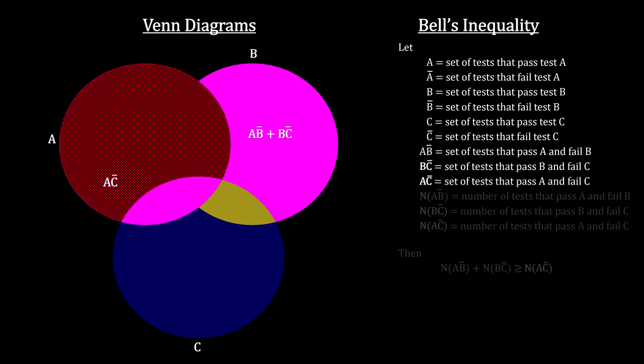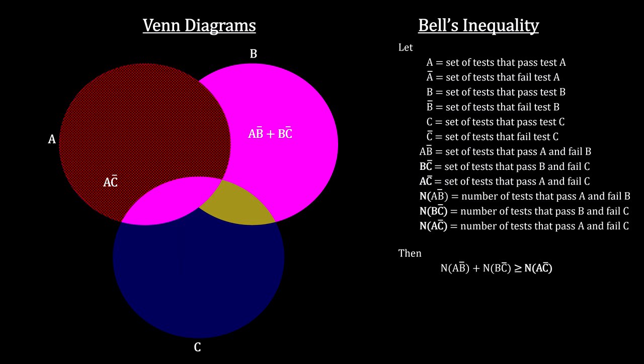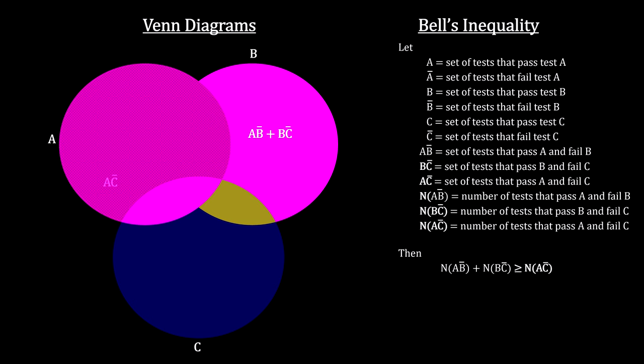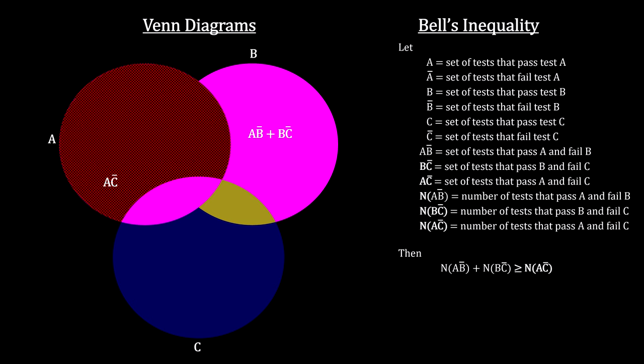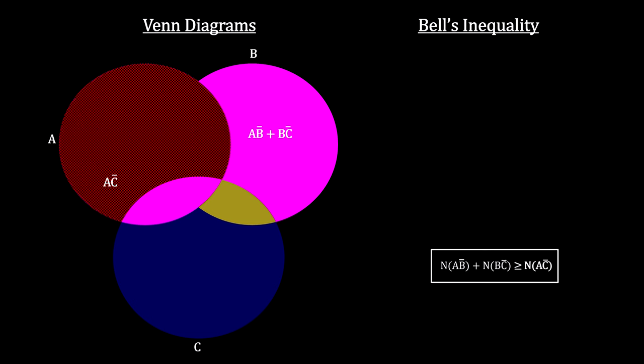From set theory, we know that the number in A-not-B plus the number in B-not-C must be greater or equal to the number in A-not-C. This is the famous Bell inequality.